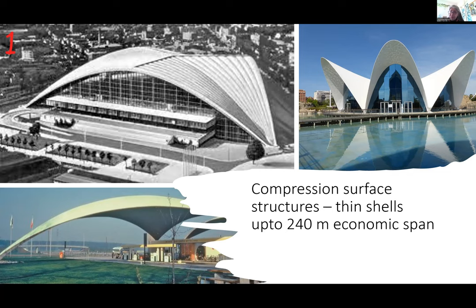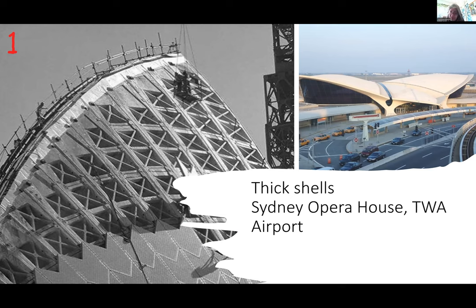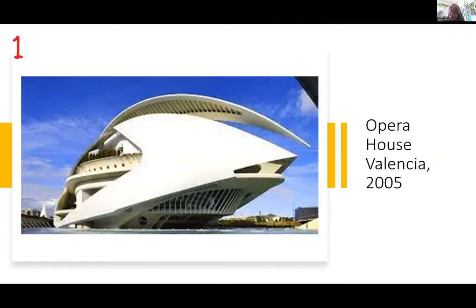We also have thick shells — when you don't want to use the best form, like Sydney Opera House or TWA Airport. If you are not using the moment-diagram form, you can have a thicker surface. The Sydney Opera House looks like a curved waffle slab, with steel bracing in every cover. The TWA airport building has pieces of shells added to each other with edge beams on the sides. This is Calatrava's design from 2005.